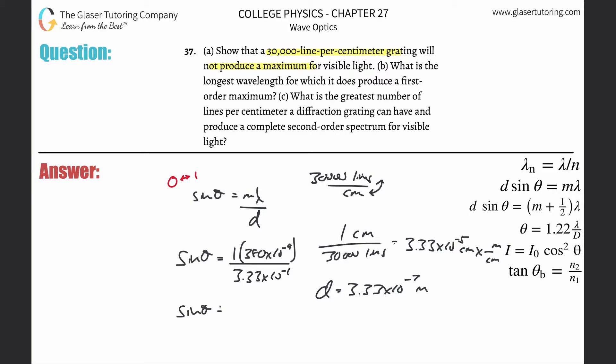So 380 times 10 to the minus 9th divided by 3.3333 times 10 to the minus 7th. And I know I put a 1 there, so I'm not really sure what I'm doing. But there it is. So this comes out to be now a value of 1.14.